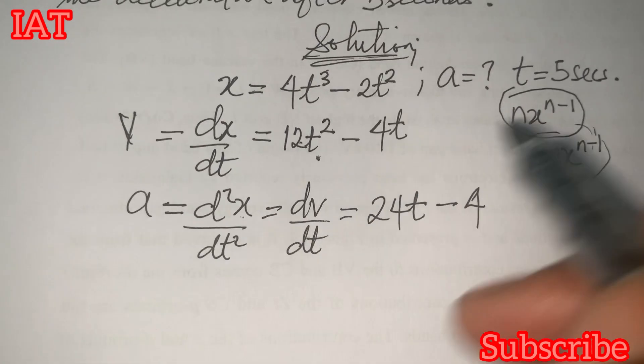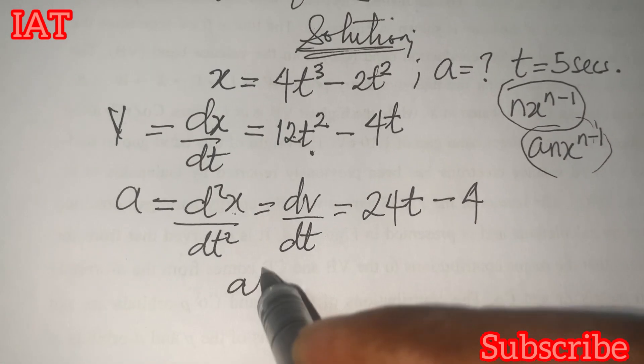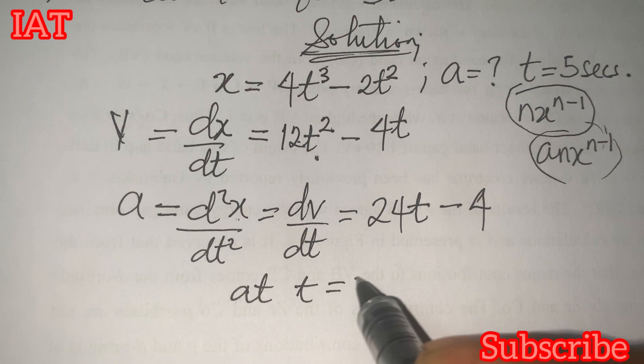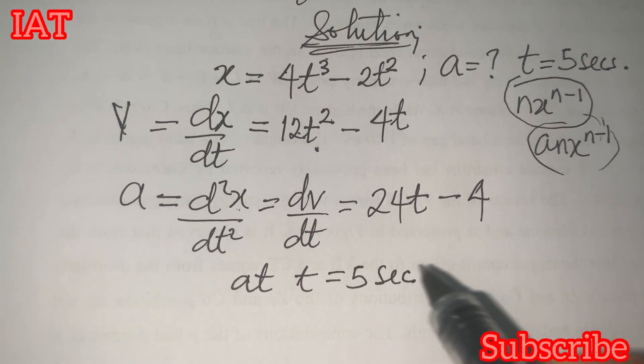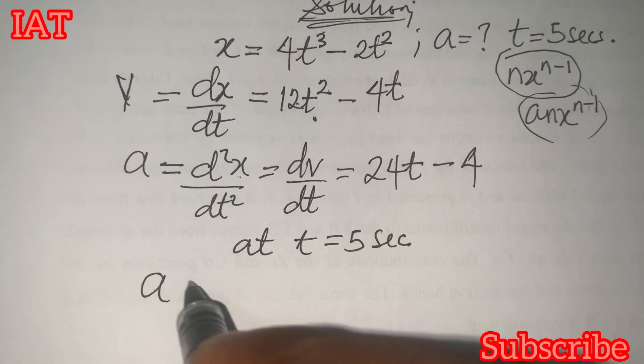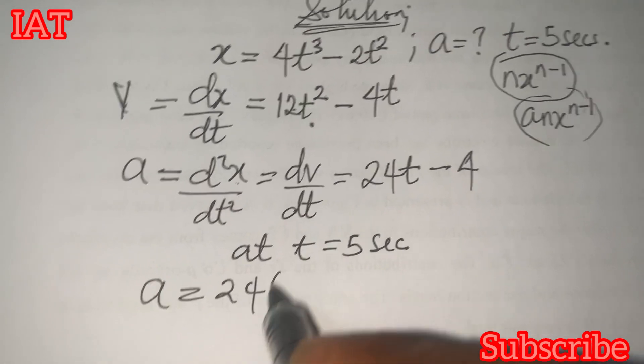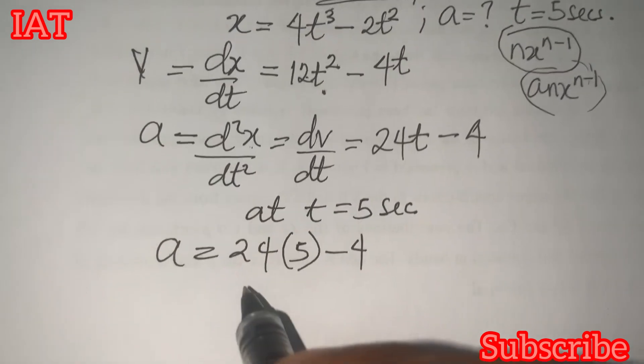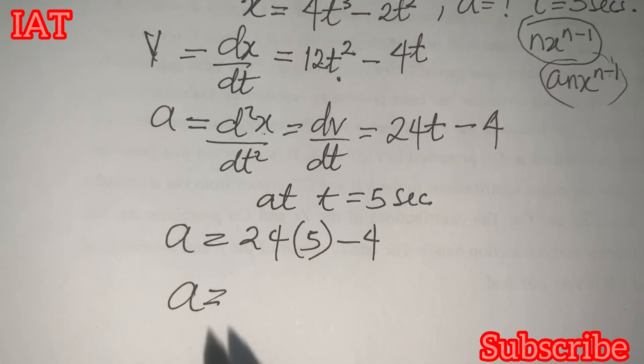Finally, we have a condition that at t equals 5 seconds. So, that means anywhere we have t, we plug in 5. So, a now will be equal to 24 multiplies by 5 minus 4. So, by the time you put the whole of this together,